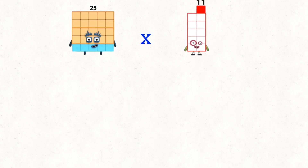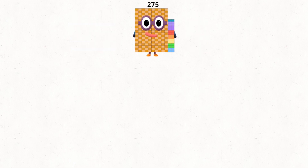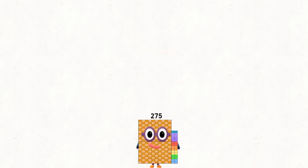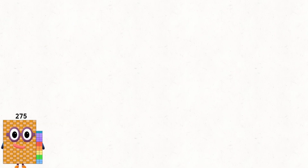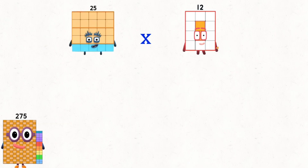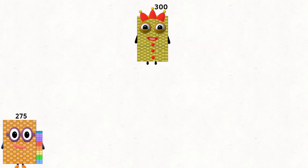25 times 11 equals 175. 25 times 12 equals 300.